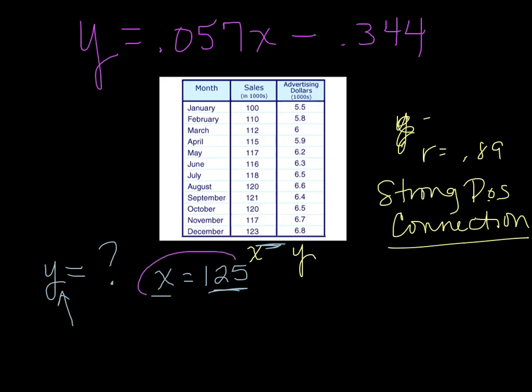This time I have a number that I want to plug in for X. So in your calculator, you're going to do 0.057 times my X value, which is 125, and then minus 0.344. You do that all in one step in your calculator and you get 6.78.